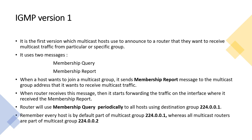Whenever a host wants to join a particular group it sends a membership report message. It goes to the group address, but the router receives it because the router is also part of that multicast group — you have to enable multicast on the router as well. When the router receives this message, it then communicates with the source server which is the originator of the traffic, and then forwards the traffic to the host via the interface on which it received the membership report message.